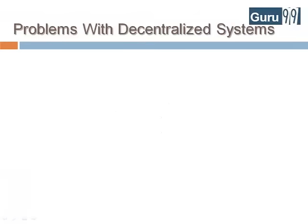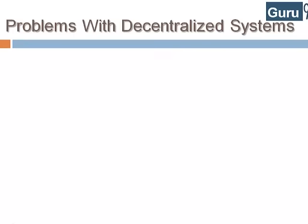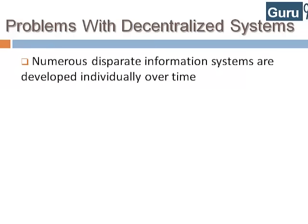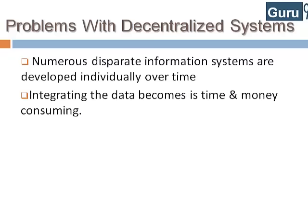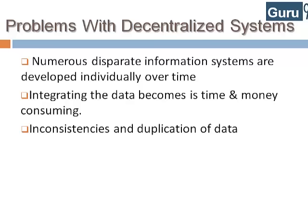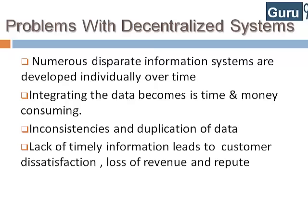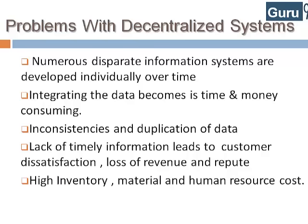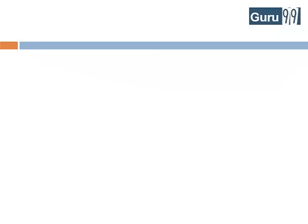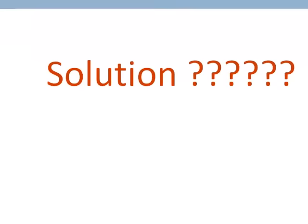These are just a few of the many problems with decentralized systems. Some major problems are: numerous disparate information systems that are developed individually over time and are difficult to maintain; integrating the data is time and money consuming; inconsistencies and duplication of data; lack of timely information leads to customer dissatisfaction, loss of revenue, and reputation; and high inventory, material, and human resource costs.